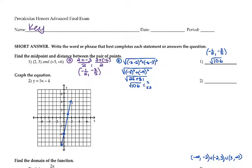So it goes way back. Midpoint and distance are the two formulas you need to know for that section. Midpoint would be (x1 plus x2) divided by 2, (y1 plus y2) divided by 2. And then the distance formula is the square root of (x2 minus x1) squared plus (y2 minus y1) squared.